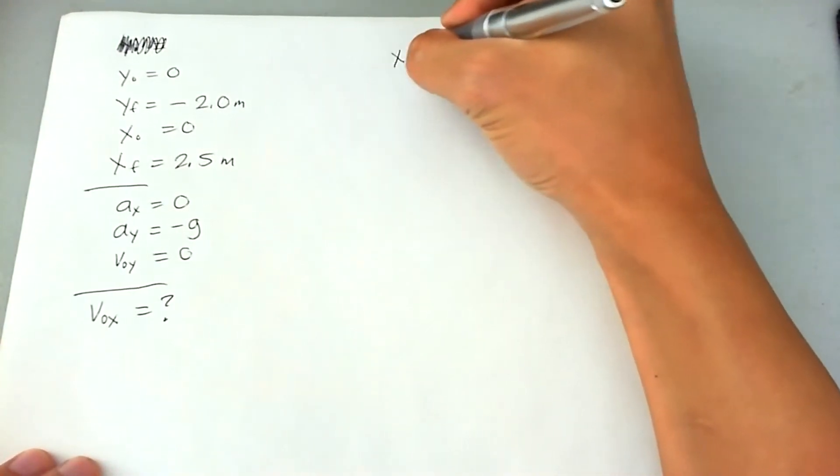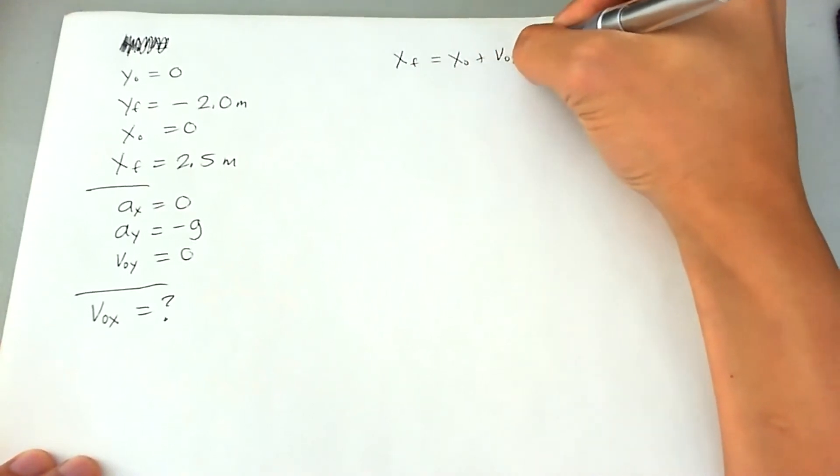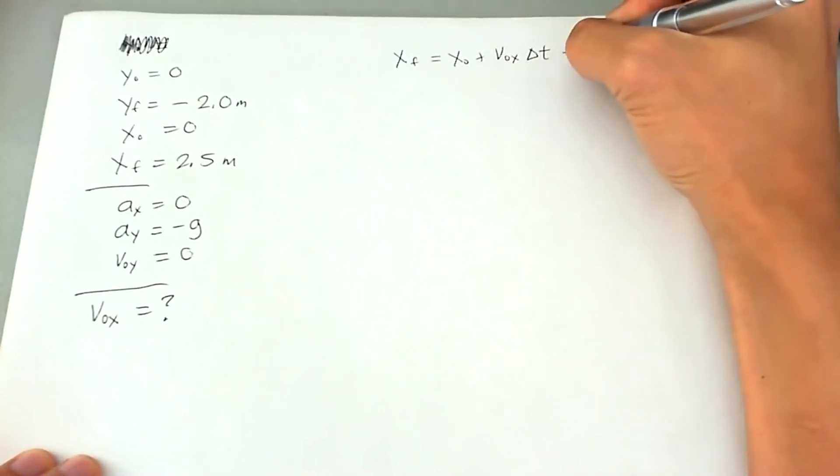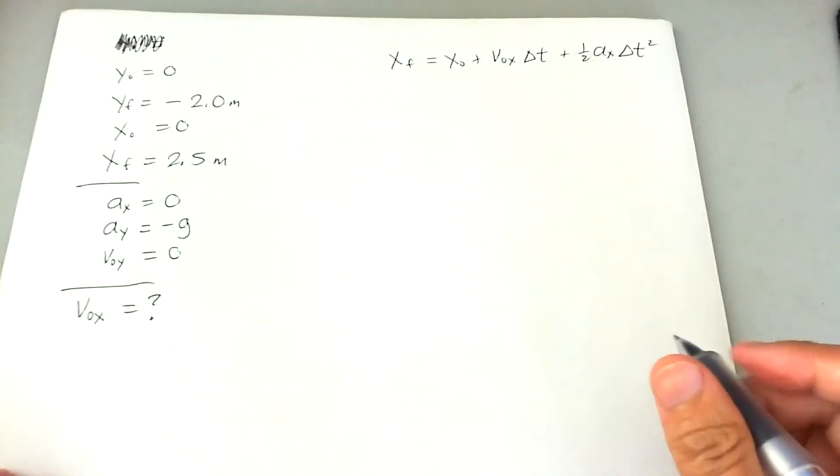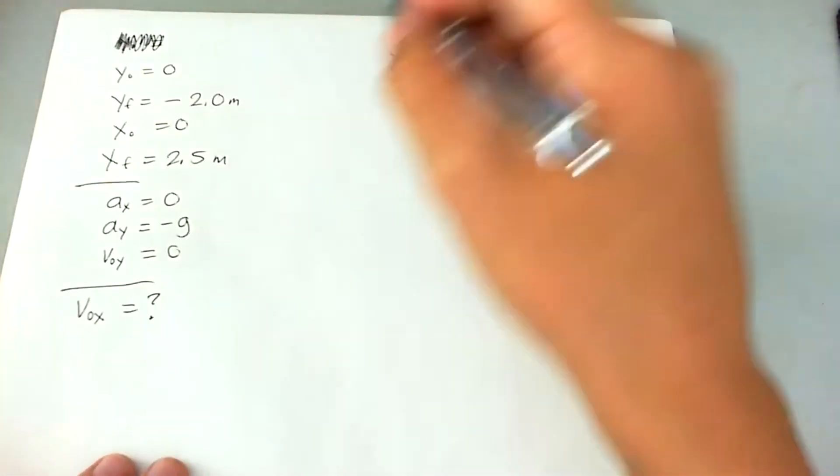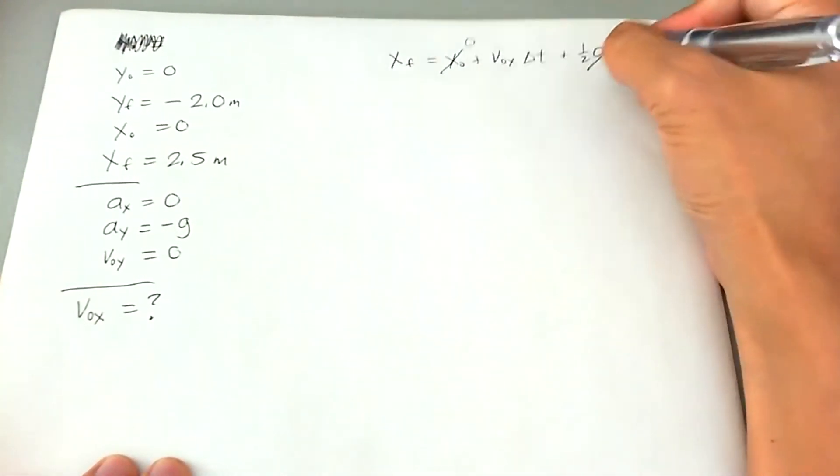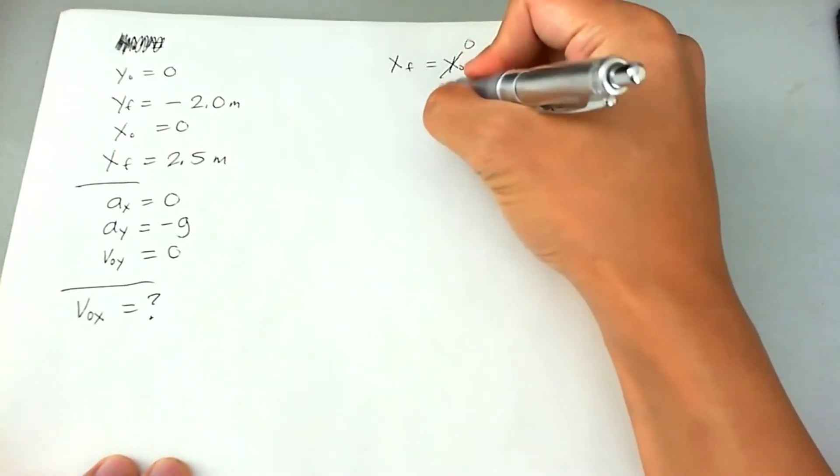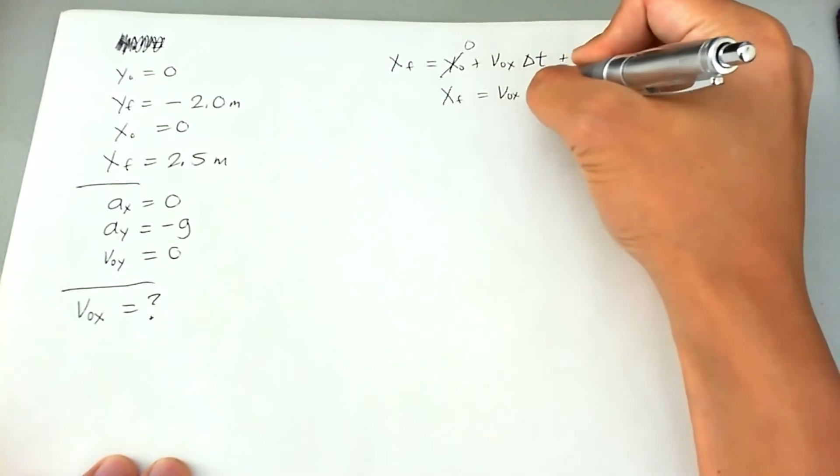So X final is equal to X naught plus V naught X delta T plus one half AX delta T squared. Let's go ahead and get rid of a few things. X naught is zero, A of X is also zero. That leaves with X final equaling to V naught X times delta T.